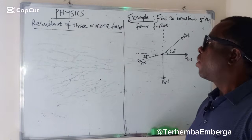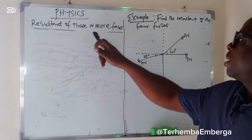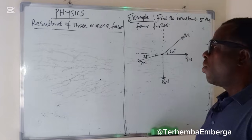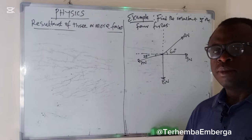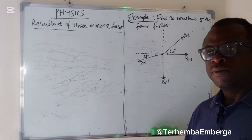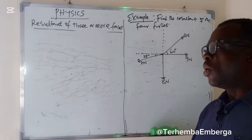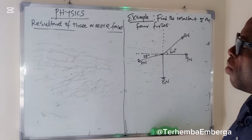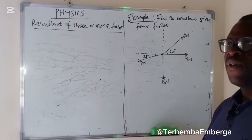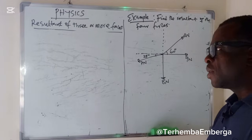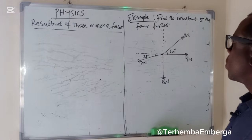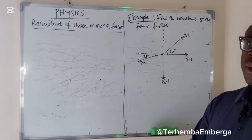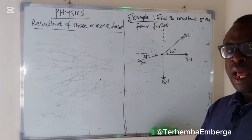Today we will look at the resultant of three or more forces. Another name for resultant is 'effective,' or you can call it 'total.' When you have three or more forces and you want to find the total, the resultant, or the effective, we resolve them according to the components or the axis.